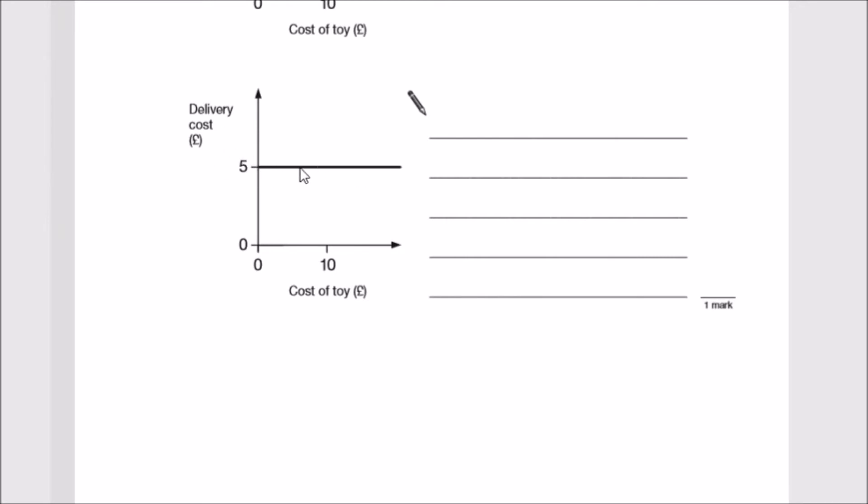Look at this one: it seems to be constant. There's a constant delivery cost of 5 pounds. It doesn't matter if the cost of the toy changes, so we can say delivery cost stays constant at five pounds.